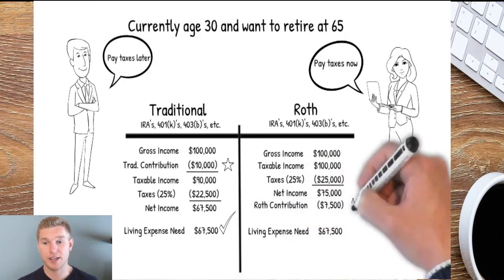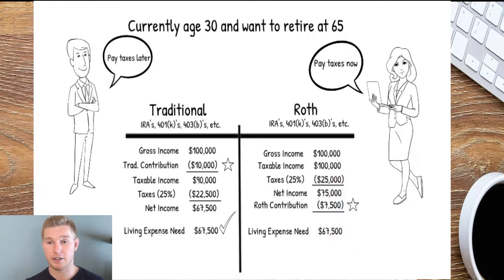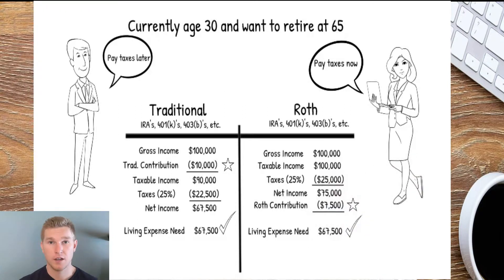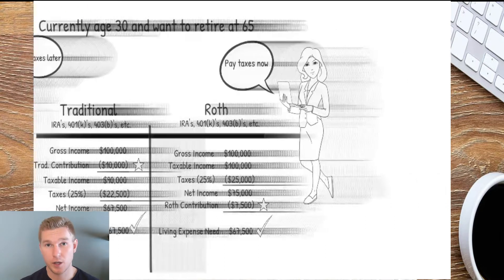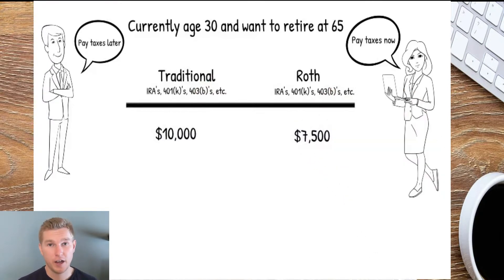Rachel then contributes $7,500 to her Roth retirement account, leaving her with living expenses of $67,500, exactly the same as Tom. So at the end of the day, Tom is contributing $10,000 of pre-tax money to his traditional account, while Rachel is contributing $7,500 of after-tax money to her Roth.